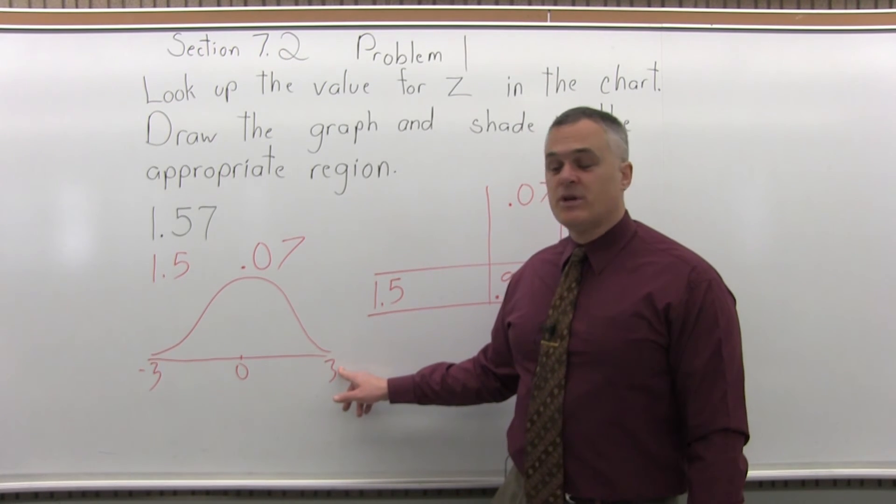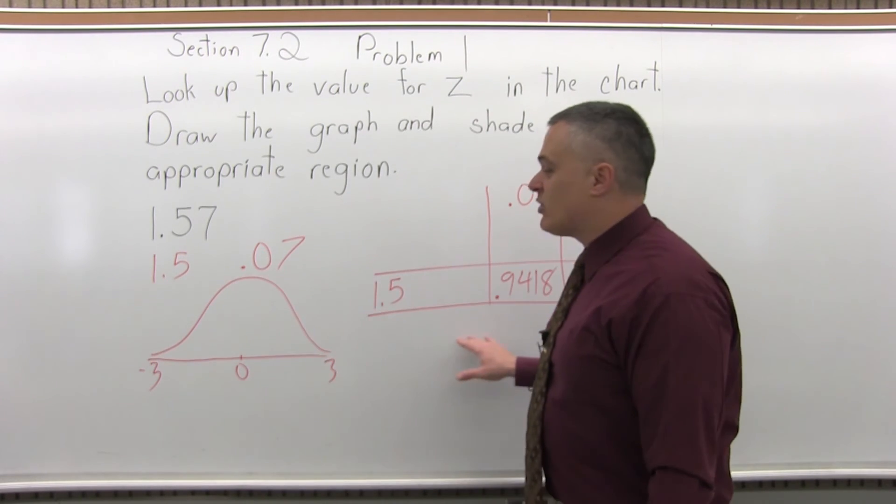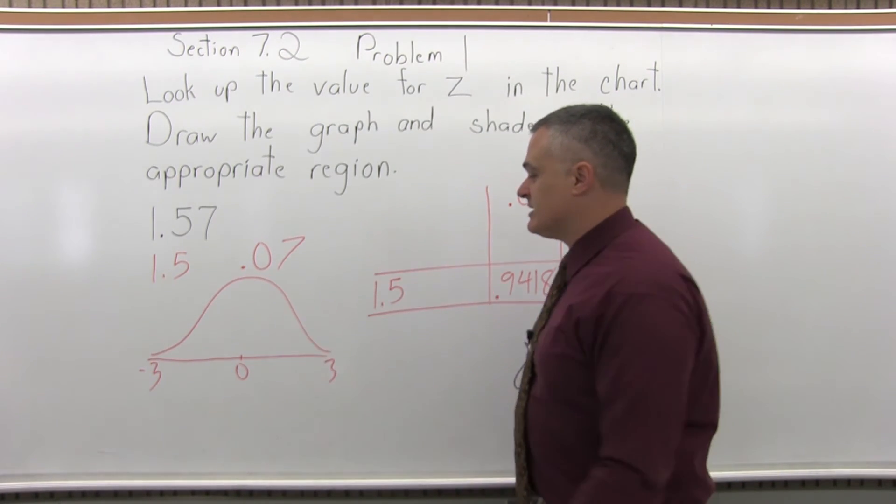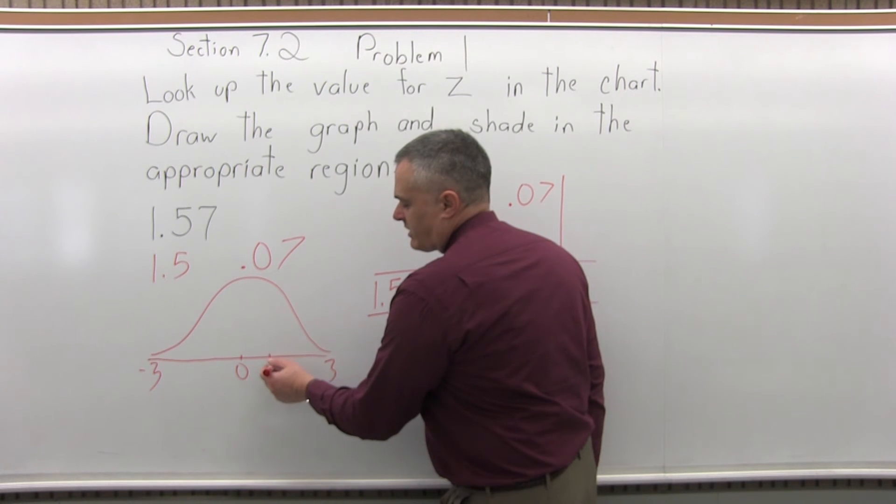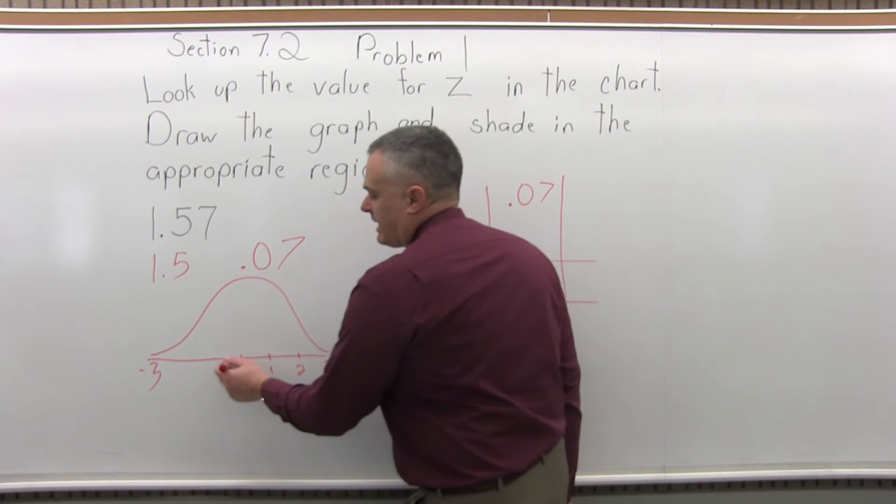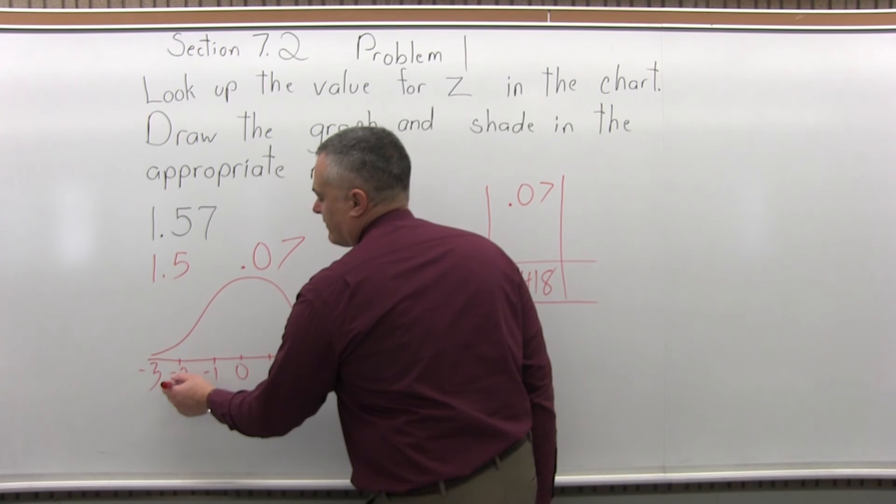On the right end, when you stop drawing the chart, you stop at about 3. And on the left end, negative 3. Again, this bell curve continues forever in both directions. And then you can split it up: 1, 2, 3. And on the other end, negative 1, negative 2, negative 3.